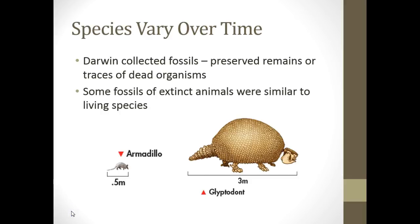Species vary over time. Darwin collected fossils, preserved remains, and other traces of dead organisms. Some fossils of extinct animals were similar to living species. For example, he found the fossil of a glyptodont, which was a giant rodent. He realized the structure is very similar to that of the armadillo, which is significantly smaller — six times smaller than the glyptodont. This is an example of species vary over time.